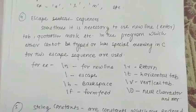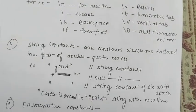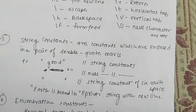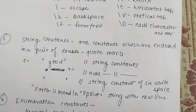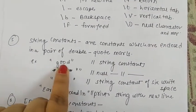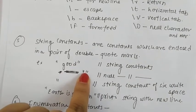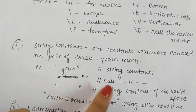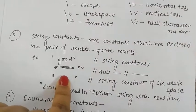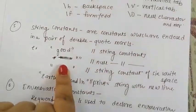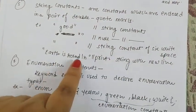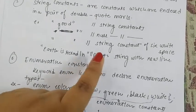String constants are enclosed within double quotation marks. If we have two quote marks with nothing written, it's a null string constant. If we have white space, then there is white space. If we have slash n or something to print, we handle it accordingly.